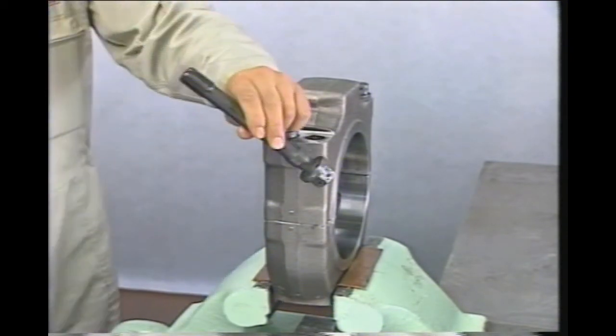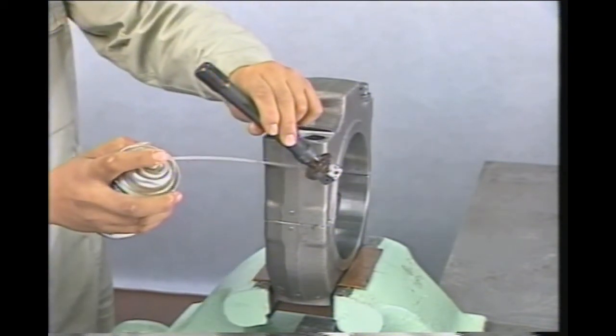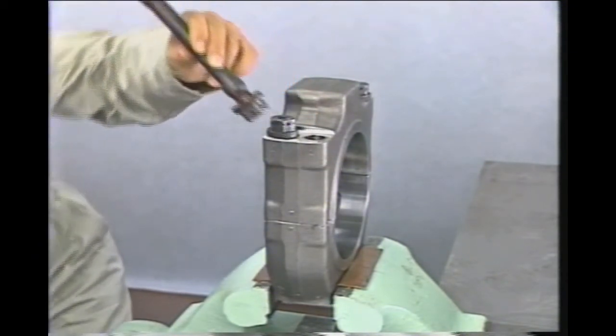Tighten the crank pin bolt at torque A without the bearing shell. Spray the mating surfaces of the bolt with molly coat.